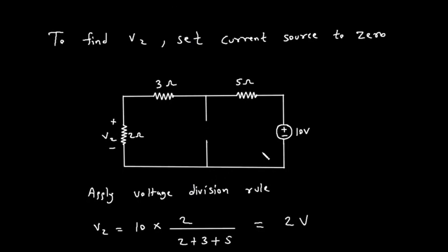Step 2: Finding V2 — Contribution from the Voltage Source. Next, let's find V2, which is the voltage across the 2 ohm resistor due to the 10 volt voltage source only. This time, we deactivate the 4 ampere current source. A current source is deactivated by setting its current to zero, which means replacing it with an open circuit, or a break in the wire. After removing the current source, the circuit becomes a single series loop. The 10 volt source is connected in series with the 5 ohm, 3 ohm, and 2 ohm resistors.